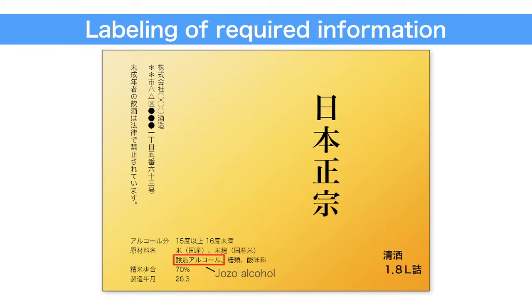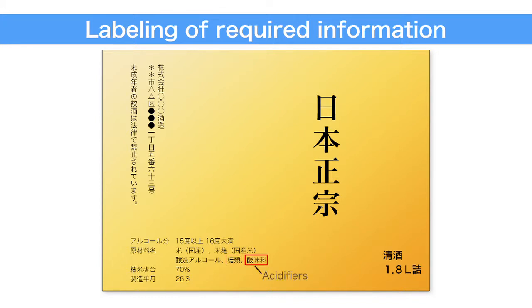Another ingredient listed on the label is jozo alcohol, which means purely distilled alcohol. Jozo alcohol is added to increase the aroma and bring out the flavor, so its inclusion on the label indicates that the sake will have an elegant taste and a strong fragrance. The label also includes the term torui, meaning sugar and others, such as grape sugars, which can be used as secondary ingredients only in futsushu, and when used, this information must appear on the label. Some brewers also add acidifiers, as a lack of acidity may lead to an unbalanced flavor, and when acidifiers are added, this information must be indicated too.